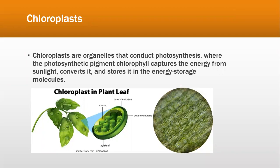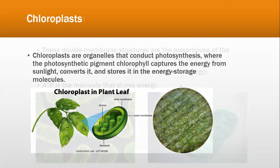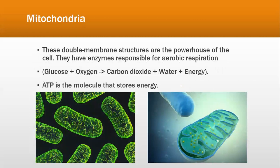Chloroplasts are organelles that conduct photosynthesis, where the photosynthetic pigment chlorophyll captures light energy and converts it, with the products stored as starch. Remember, the storage material in animals is glycogen, whereas the storage material in plants is starch, which is actually stored as a photosynthetic product. Chlorophyll also gives the plant its green color.